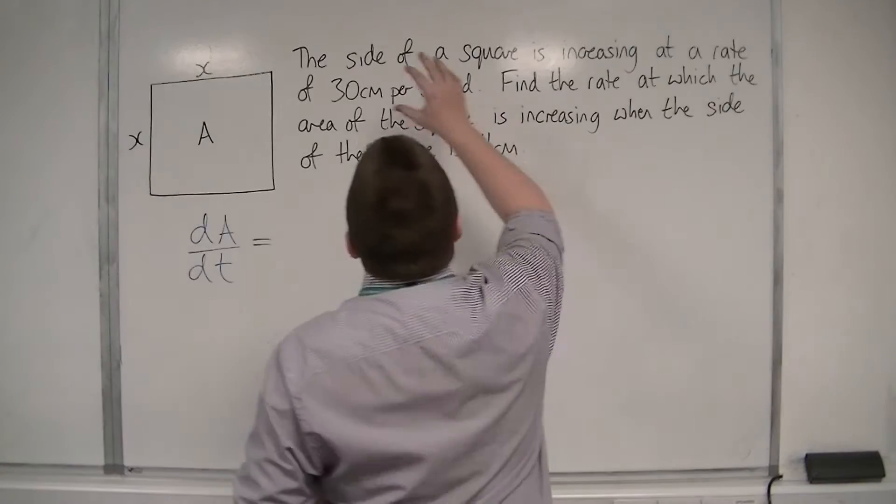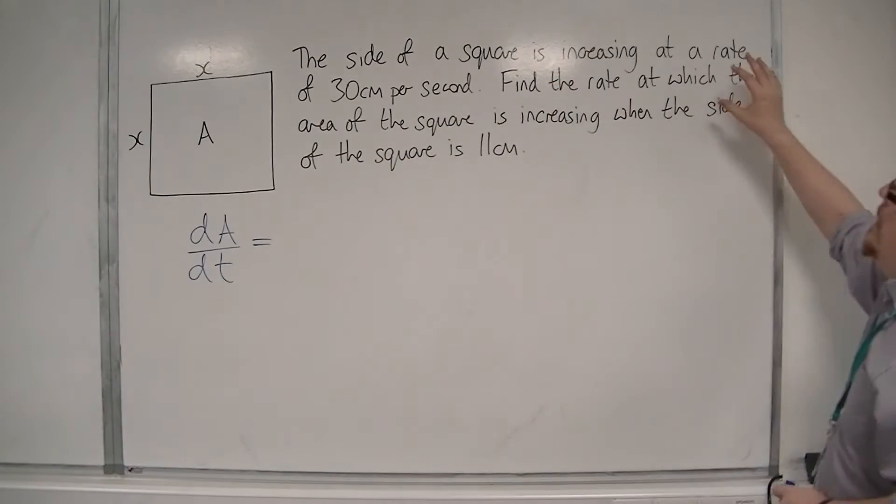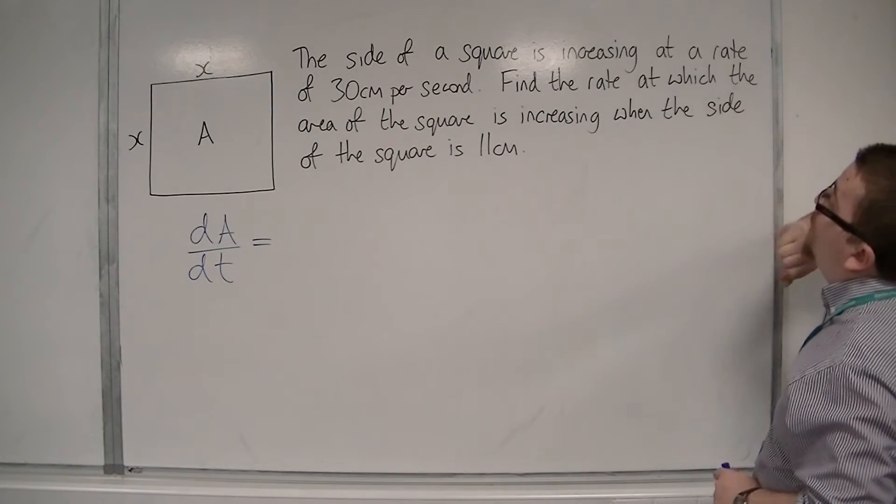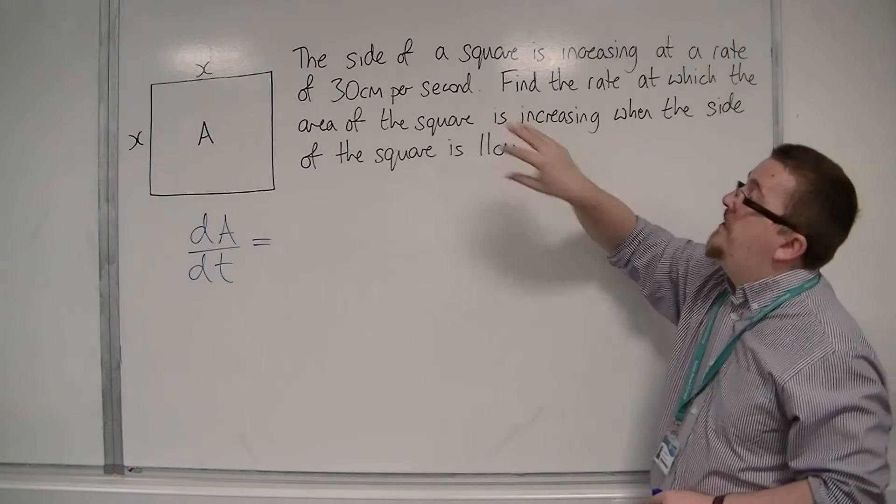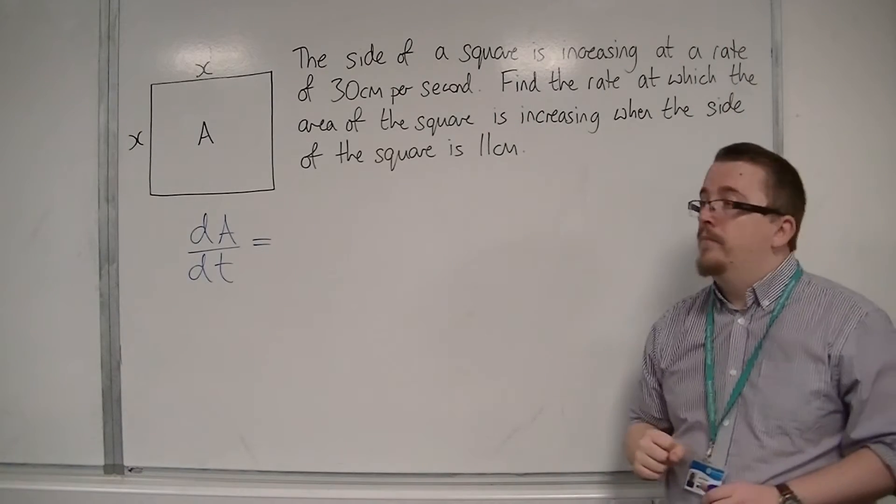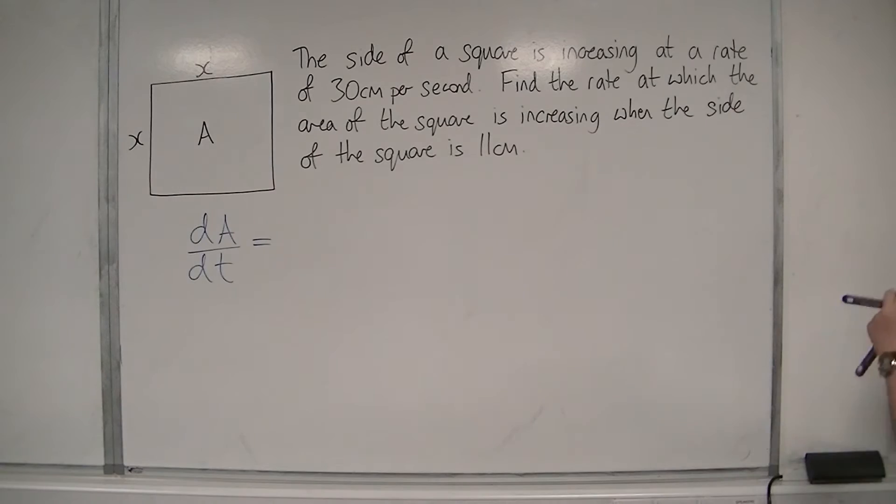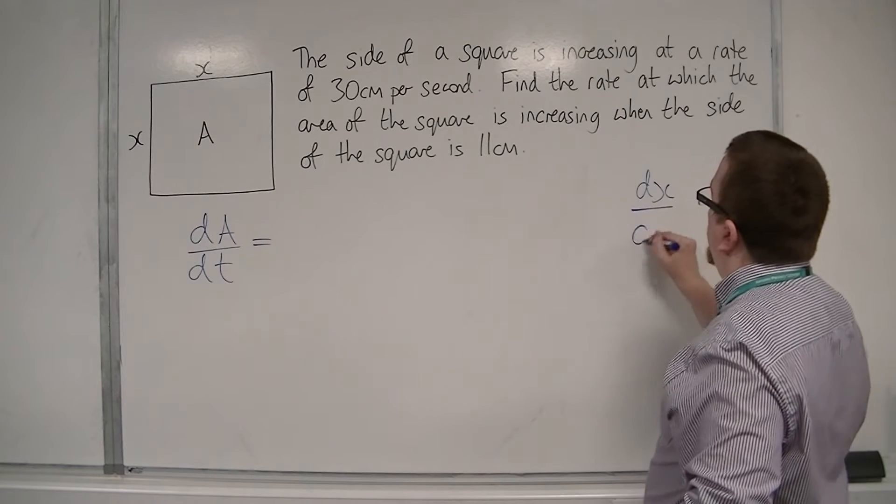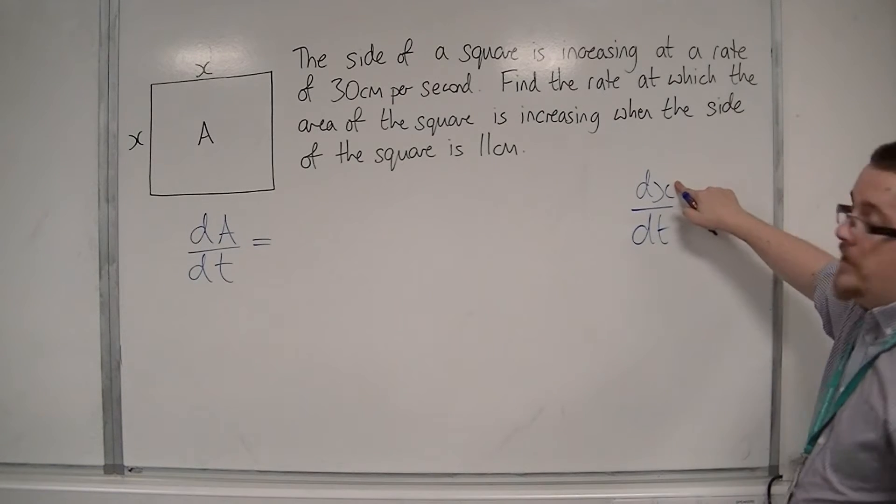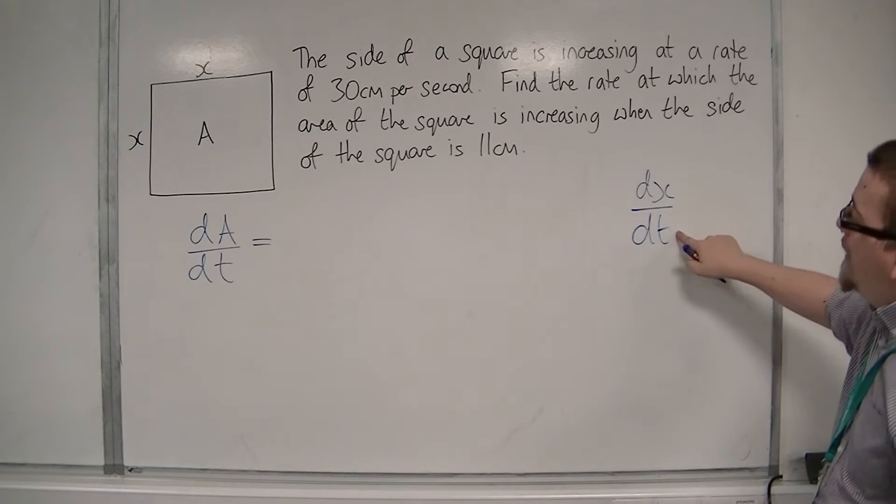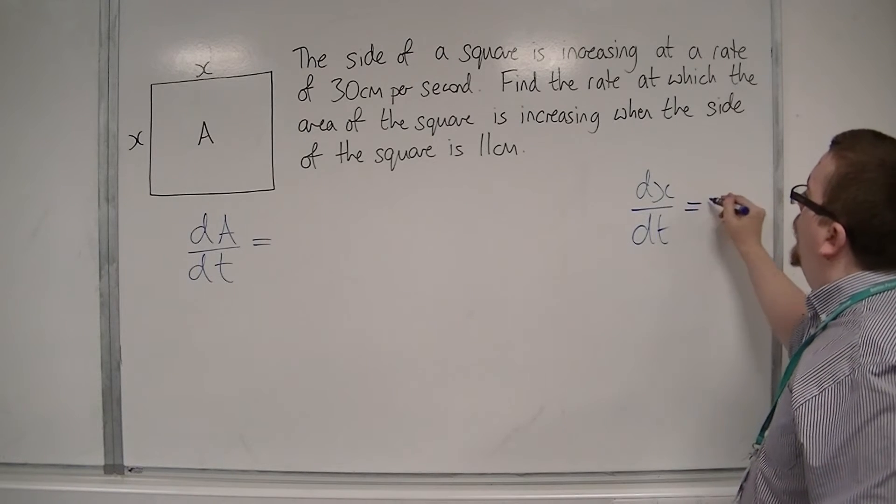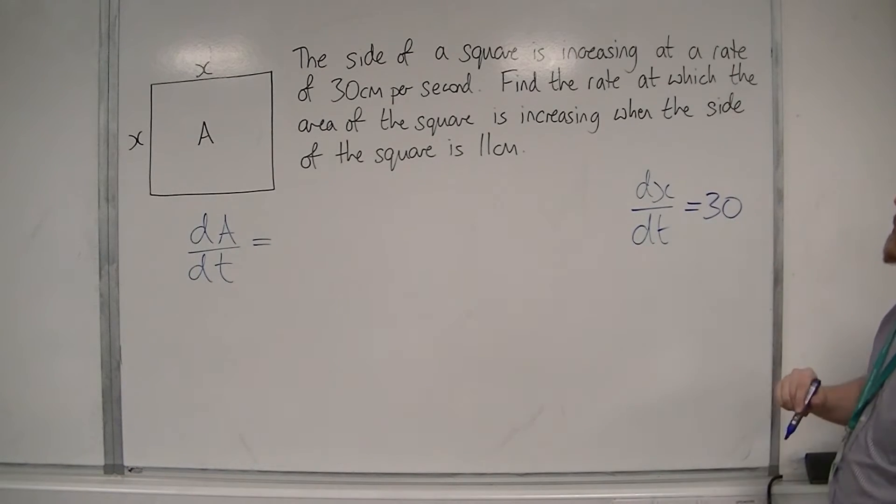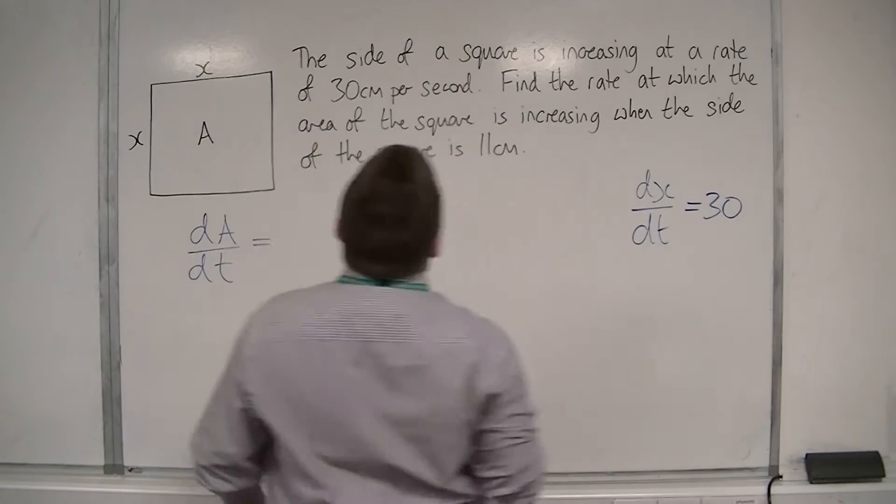Now, we're told that the side of the square is increasing at a rate of 30 centimetres per second. So the side of the square is x. So we can then say that dx by dt, the rate at which the side is increasing with respect to time, is equal to 30. So we've got that bit of information.